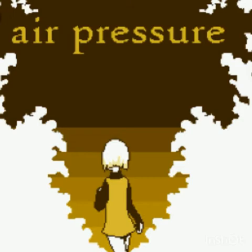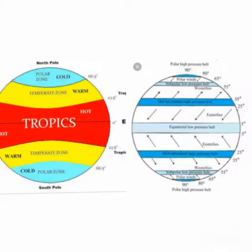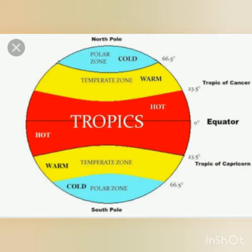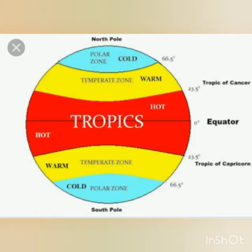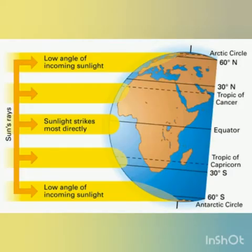Let us recall what we had studied in the last lecture. We had studied about the temperature zones and the pressure belts. We also observed the diagrams showing the three zones — the torrid zone, the temperate zone and the frigid zone. The next diagram we saw was of the pressure belt. We also studied the pressure belts on the earth's surface, in which we saw the uneven distribution of the sun's heat, which also leads to an uneven temperature, and ultimately creates the temperature zones.